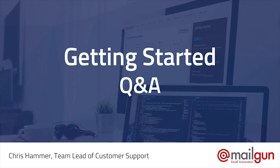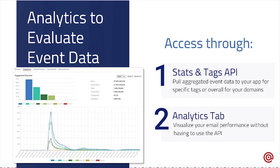I'm going to move on to the next section here, which is our analytical features to evaluate how your emails are working and how they're performing. You can see your overall analytics for your sending domains or use our tagging feature to segment your messages for more precise data. These analytics features can be accessed through the stats and tags API, or you can just use the Analytics tab of the control panel. This is fairly new — the analytics tab has only been around for a couple of weeks.